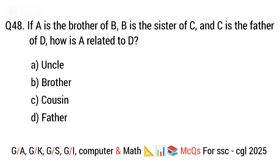Question 48. If A is the brother of B, B is the sister of C, and C is the father of D, how is A related to D? The right answer is option A. Uncle.